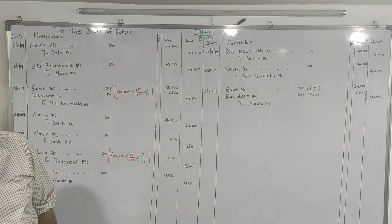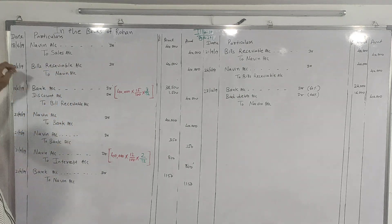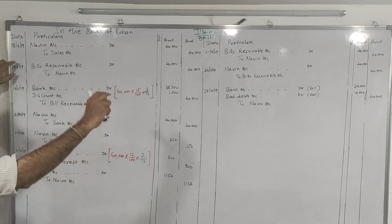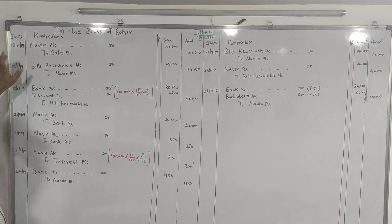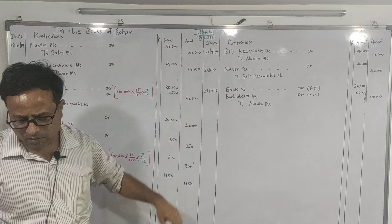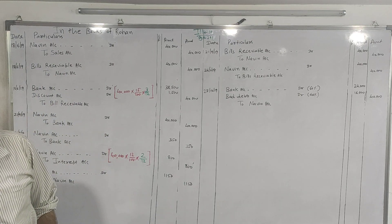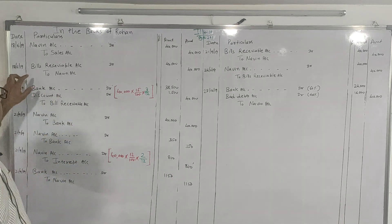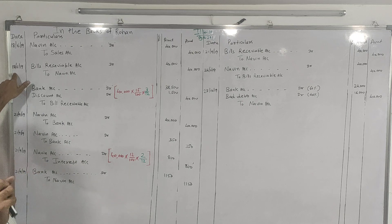Rohan draws a bill for the amount due for 3 months on the same day. Since the date has been mentioned, we write the date. On the same day of the sale, Rohan prepared a bill and Navin accepted and returned it. The entry is: Bills Receivable Account Dr. to Navin Account ₹40,000. Date is 18th June.